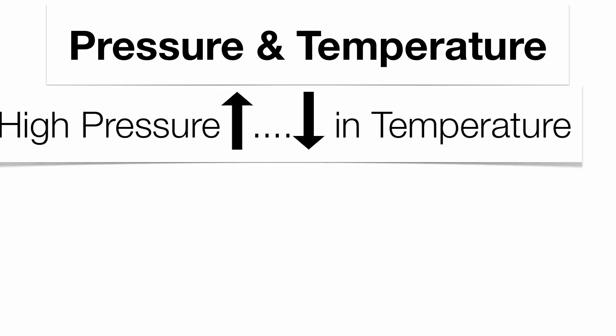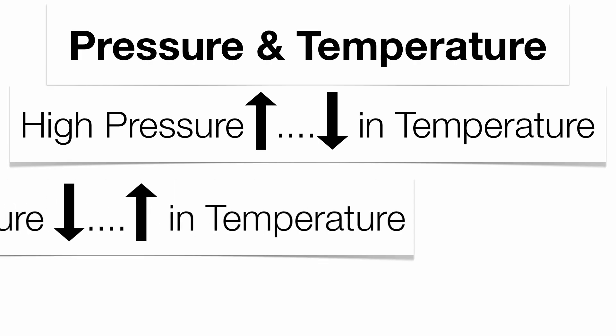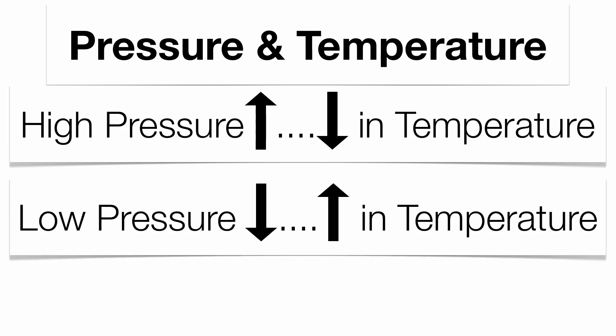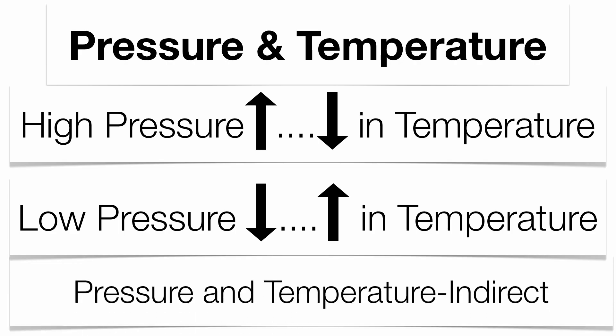Pressure and temperature have a very distinct relationship: high pressure corresponds to low temperature, and low pressure corresponds to high temperature. That's an indirect relationship between pressure and temperature — you definitely need to know it. Anytime you have a falling barometer, it means low pressure is coming in, and that means a storm system is working its way into your location. When you deal with a falling barometer, bad weather is on its way.